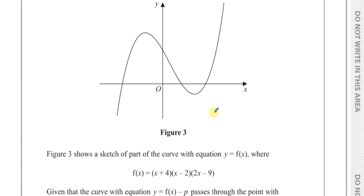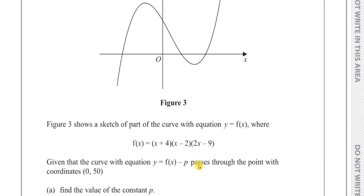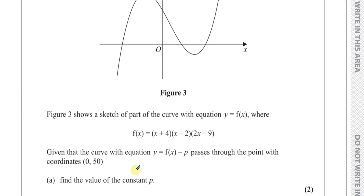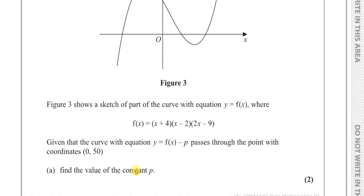As you can see it's a cubic curve — if you expand it you're going to get x cubed as your highest power, so it has the shape of a cubic curve. It says: given that the curve with equation y equals f(x minus p) passes through the point with coordinates (0, 50), find the value of the constant p.